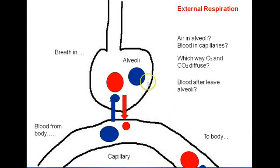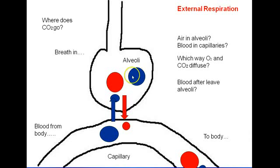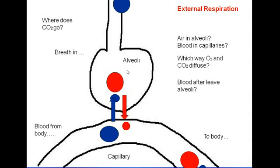One more thing on this slide: we now have CO2 that diffused from the blood into the alveoli. Where is it going to go? When you breathe out, that CO2 will leave the body. That's how we get rid of the waste product carbon dioxide.